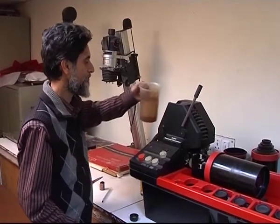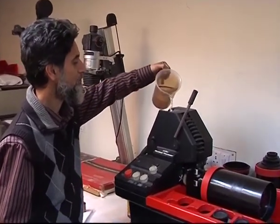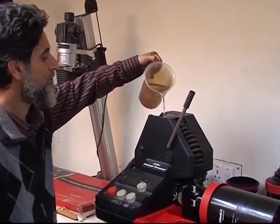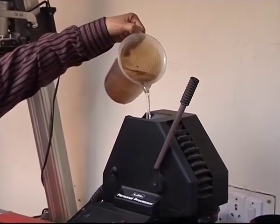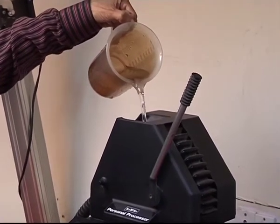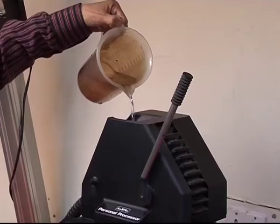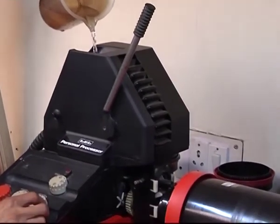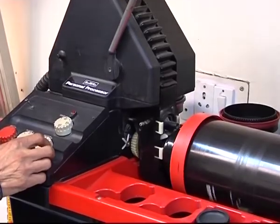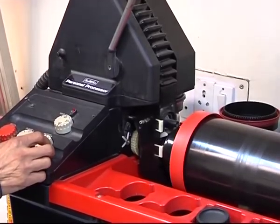Wash. Film is next passed through a water bath to wash the fixer solution out of the emulsion. It is especially important to remove the thiosulphate. If thiosulphate — hypo — is retained in the emulsion, it will eventually react with the silver nitrate and air to form silver sulphate, a yellowish-brown stain. The amount of thiosulphate retained in the emulsion determines the useful lifetime of a processed film.